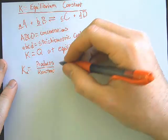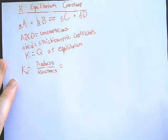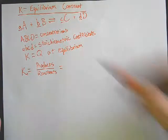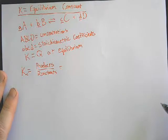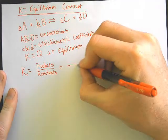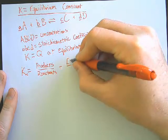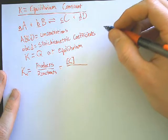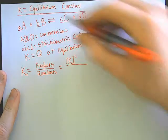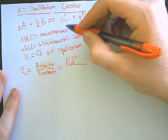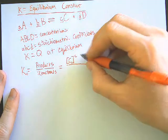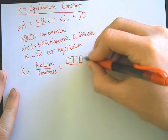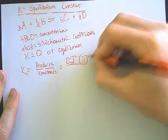Products over reactants — so let's come up with an example for this. If we had the equation right above, we would put our products on top. So we go concentration of big C to the little c power — the coefficients — and then big D to the little d power.